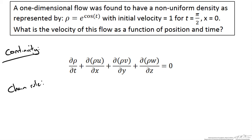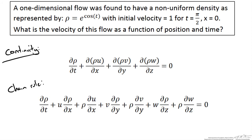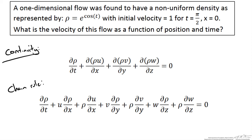Applying the chain rule, we get the following. Recall the chain rule: if we take this part of our equation and apply the differential with respect to x, the chain rule says that this equals density times the partial of u with respect to x, plus u times the partial of density with respect to x. So now each term becomes two individual terms.